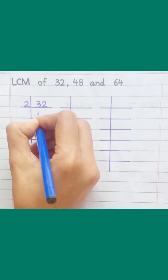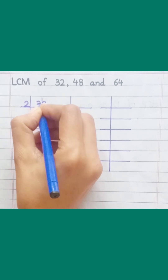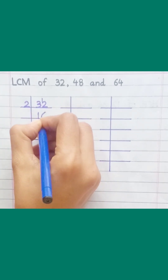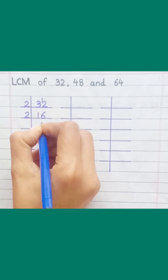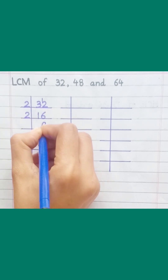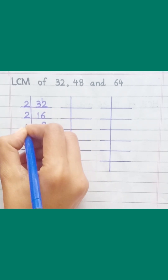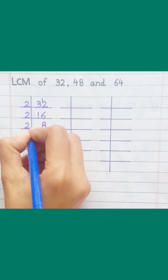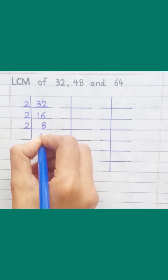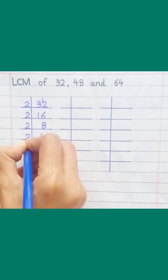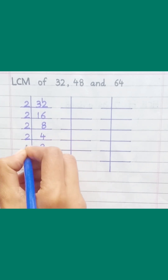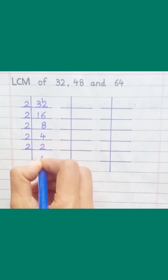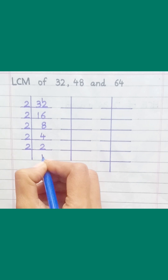2 ones are 2, 2 sixes are 12, 2 eights are 16, 2 fours are 8, 2 twos are 4, 2 ones are 2.